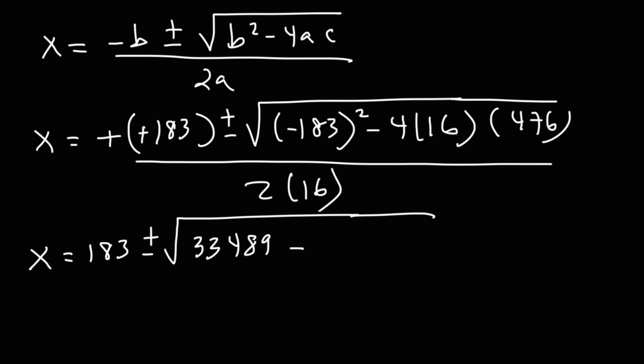And then minus 4 times 16 times 476, that's 30,464. And then 2 times 16 is 32.